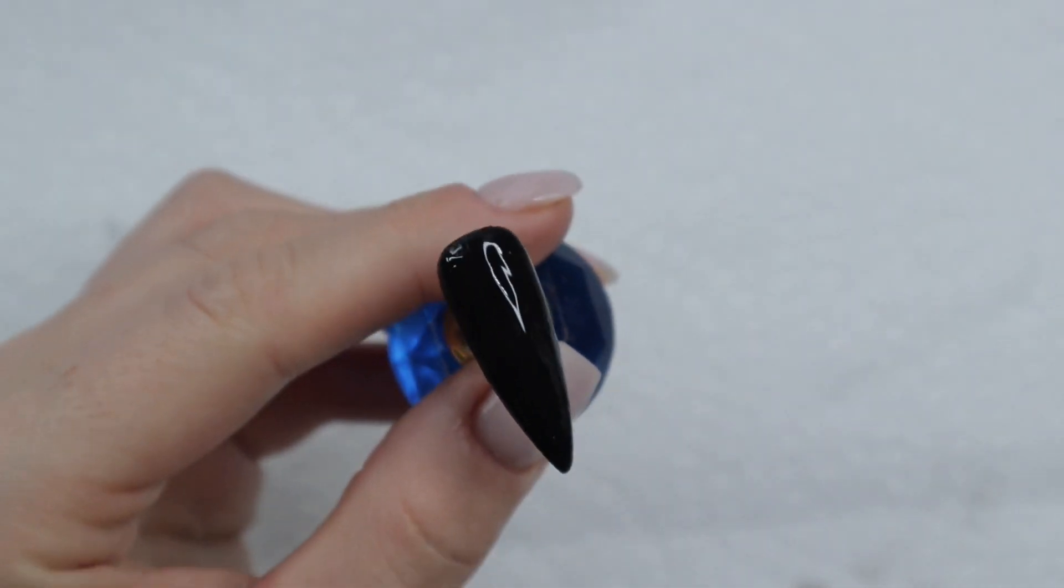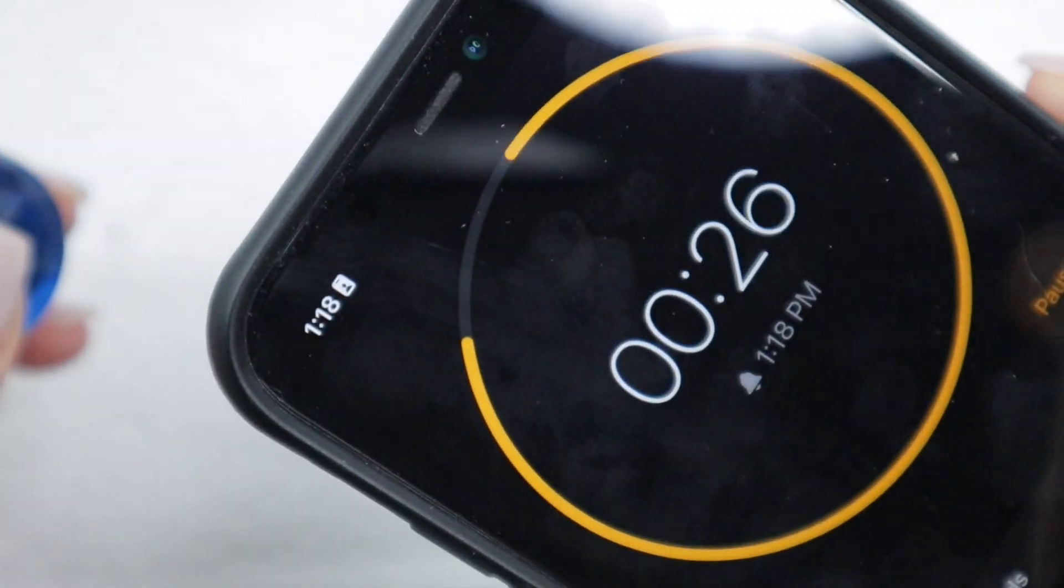After you've applied your first coat you're going to want to let it dry for 30 full seconds and then go in and apply a second coat.